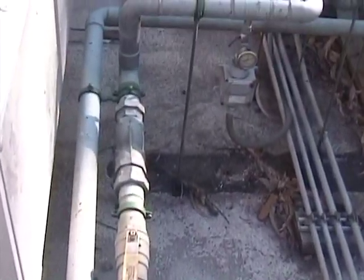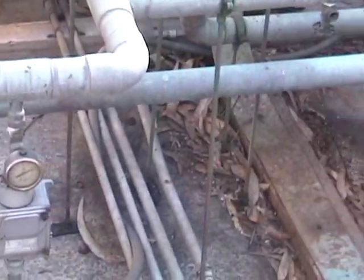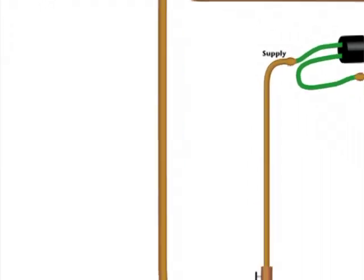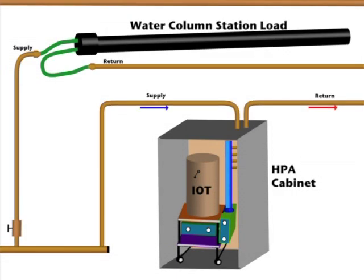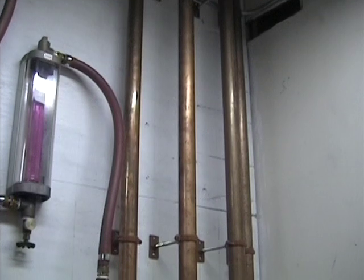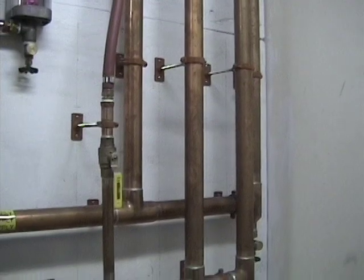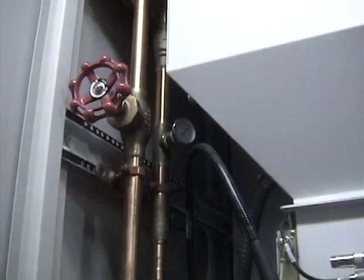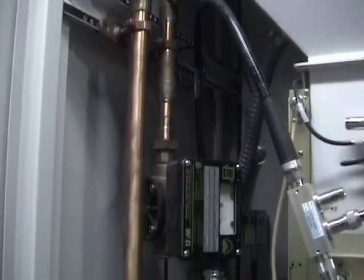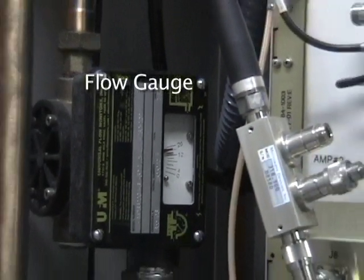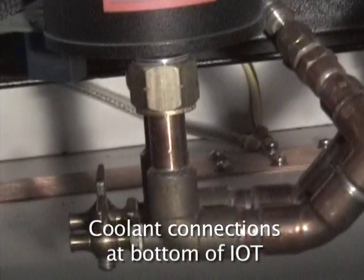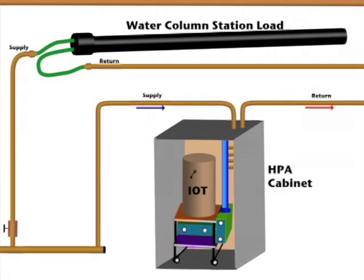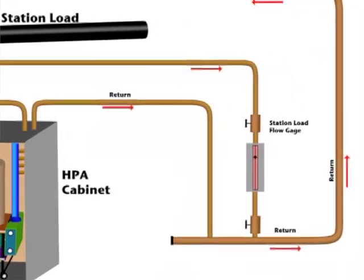After the pressure switch, the pipes are routed down below to the actual transmitter. Once in the transmitter room, the pipes distribute the coolant to the IoT and to the water column station load. Here you can see the pipes coming down from above. Once in the transmitter itself, the temperature and flow rate of the coolant are monitored. Here you can see the flow gauge. The water connections to the IoT are at the bottom. After the coolant has been warmed by the transmitter, it is returned to the cooling system above.